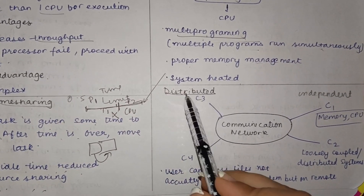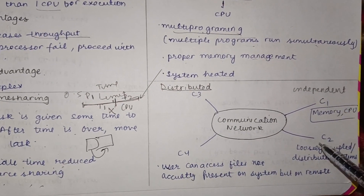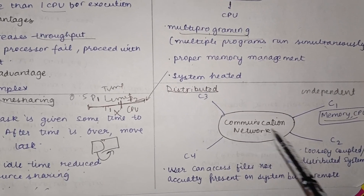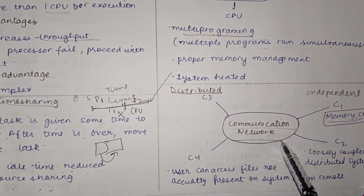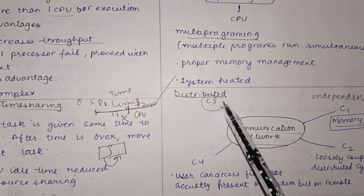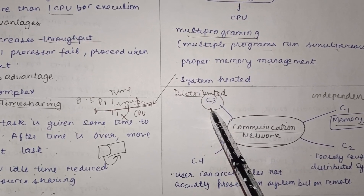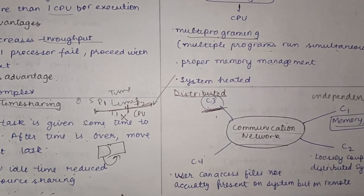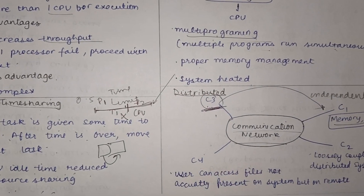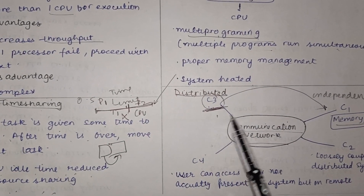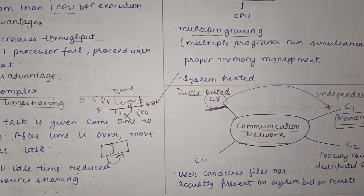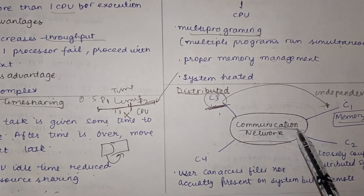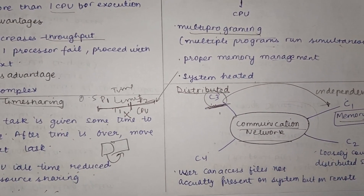In a distributed system, there are many independent, loosely coupled computers, each with their own memory and CPU, connected to each other via a communication network. The advantage is that every user can access files that are not located on their own system — they can access files located anywhere over the network. These connected computers are called loosely coupled distributed systems.